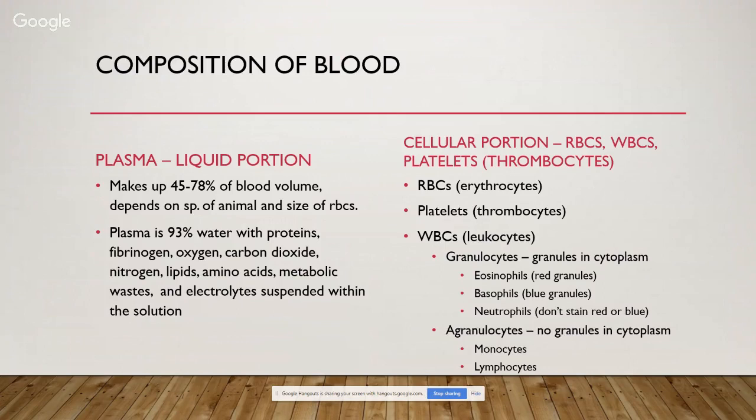What makes up blood? The composition of blood is both plasma, the liquid portion, and the cellular portion, which contains red blood cells, white blood cells, and platelets or thrombocytes. The plasma portion makes up about 45 to 78 percent of the blood volume, depending on the species and the size of those red blood cells. Plasma is 93 percent water with proteins, fibrinogen, oxygen, carbon dioxide, nitrogen, lipids, amino acids, metabolic wastes, and electrolytes — all suspended in this solution.